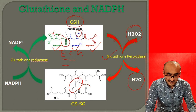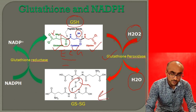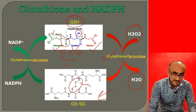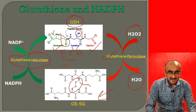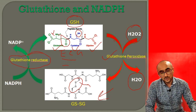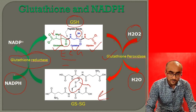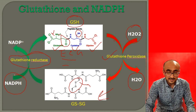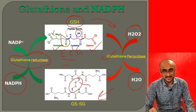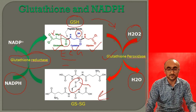The oxidized form of glutathione (GSSG) is converted back to the reduced form (GSH) by the enzyme glutathione reductase, which utilizes NADPH to reduce oxidized glutathione. This allows the reduced glutathione to be used again by glutathione peroxidase to remove free radicals from the cell.